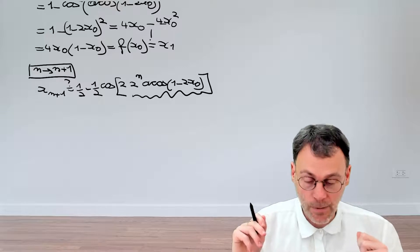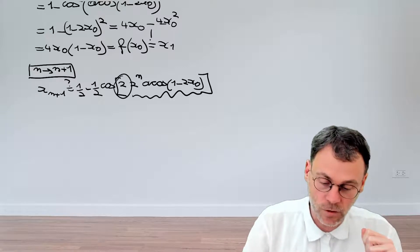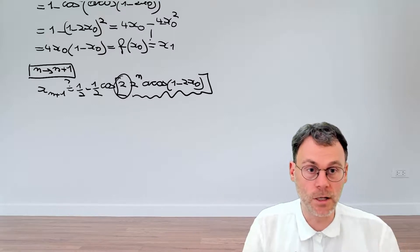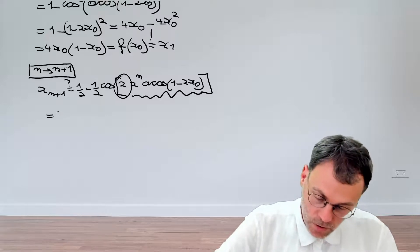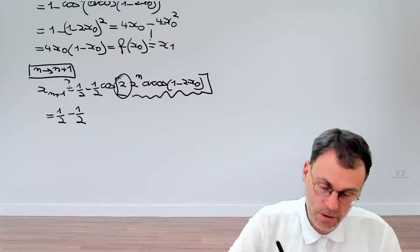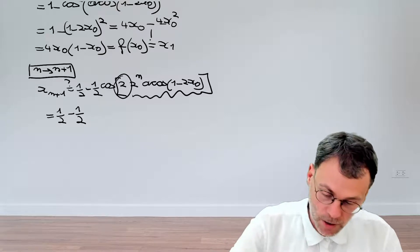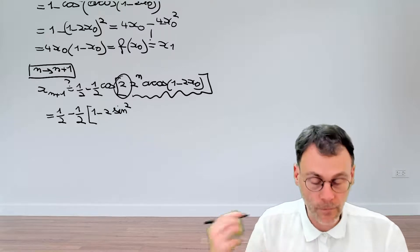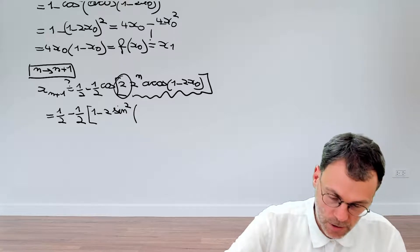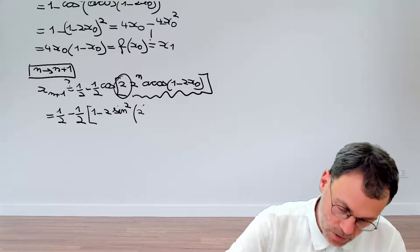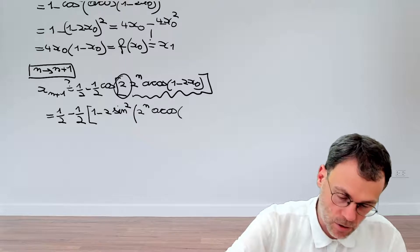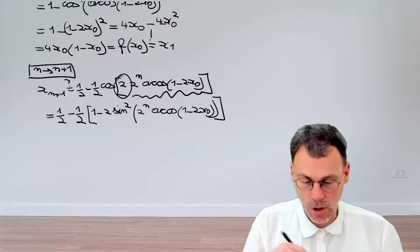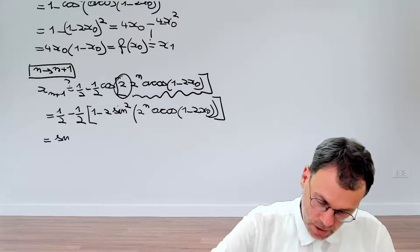Obviously we're going to play the same game as before, because we have this factor two. We use the formula to go from cosine of two alpha to reducing the angle by two. So it's going to be one half minus one half, and then cosine of two alpha becomes one minus two sine squared of the argument divided by two.